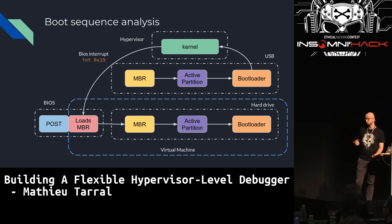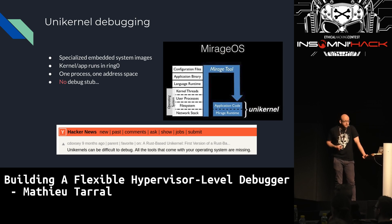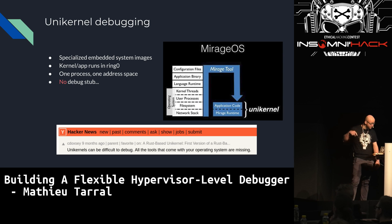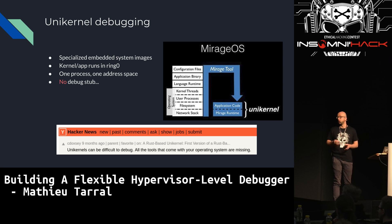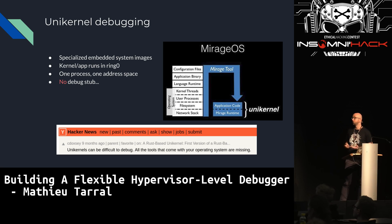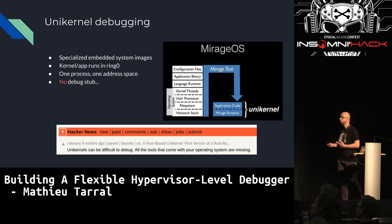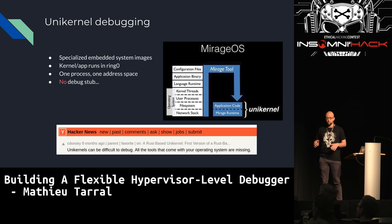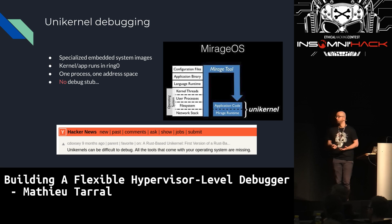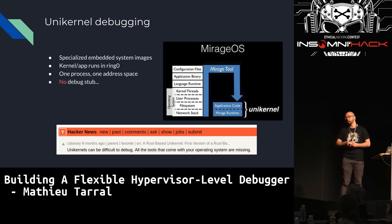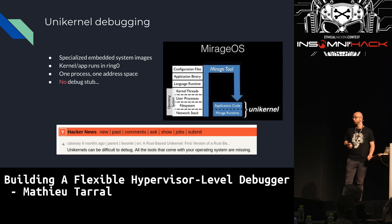Another interesting use case is unikernels. They are specialized embedded system images where you take your kernel and application and merge them into one. The kernel is stripped of any unnecessary dependencies — no scheduler, no runtime, no tools — so it boots faster, but everything runs in ring zero at the kernel level with only one process and one address space. Of course the consequence is that there is no debugging stub, so you may have to rely on the hypervisor underneath.